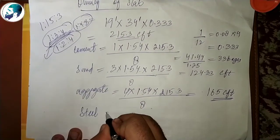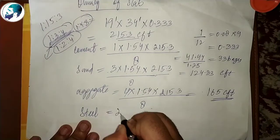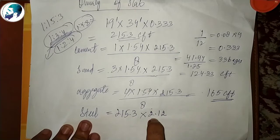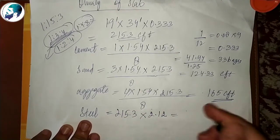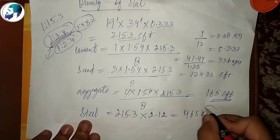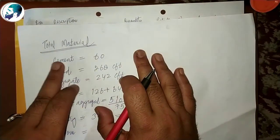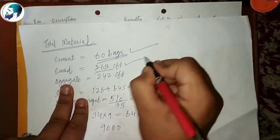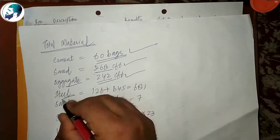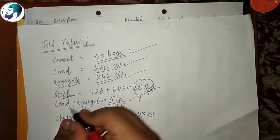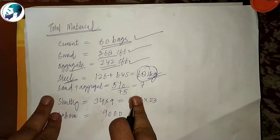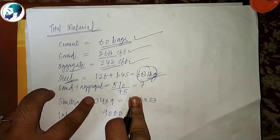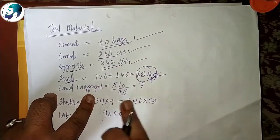Steel for slab: total quantity is 215.3 CFT × 2.12 kg/CFT = 465 kg of steel. So for the complete room, total material needed: 60 bags of cement, sand 268 CFT, aggregate 242 CFT, and steel 681 kg. Sand plus aggregate combined = 510 CFT.